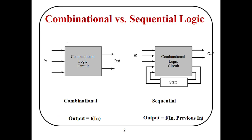In combinational logic circuits, the output is dependent only on the previous inputs — output is a function of previous inputs only. While in sequential logic circuits, the output is dependent not only on the previous inputs but also on the states of energy storage elements, such as flip-flop latches and registers.